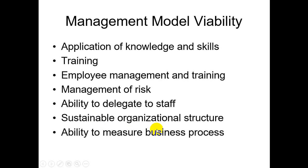A sustainable organizational structure is also a key indicator of management model viability — whether the structure is fixed and sustainable over a long period. Finally, there is the ability to measure business processes. Whether operating or managing the business, the organization must be able to periodically measure its business processes — at the beginning, in the middle, or at the end — as stipulated in the business plan.